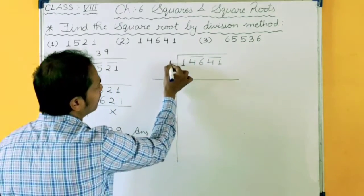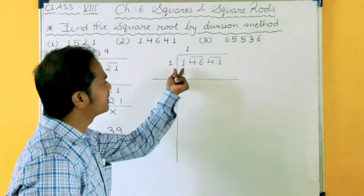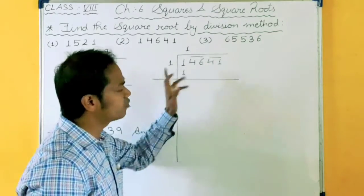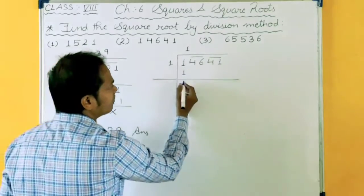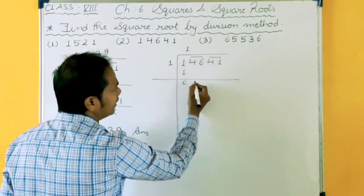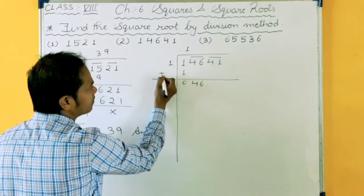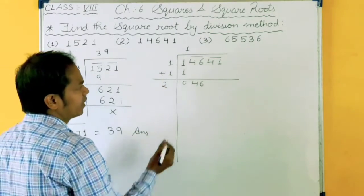So what we will take here? 1 times 1 is 1 because you will have this single pair. 2 times 2 is 4, which is bigger than 1. So you cannot subtract it. So we will take 1. 1 minus 1, 0. Then take this pair, 46. This 1 I will plus here. 1 plus 1, 2.